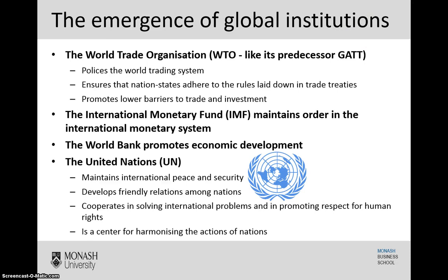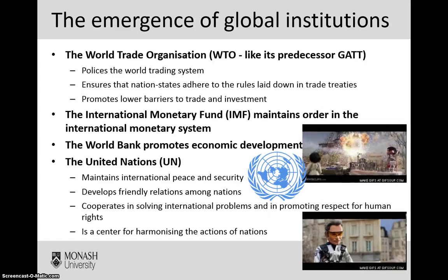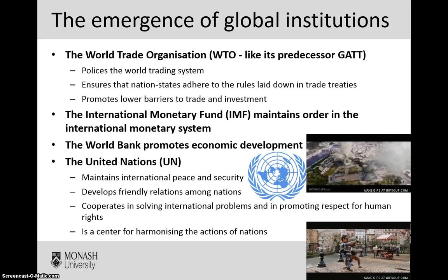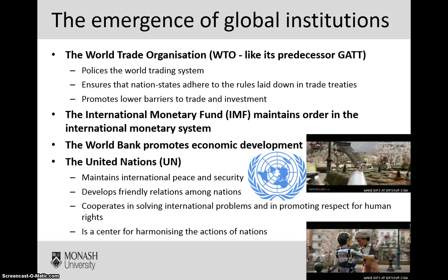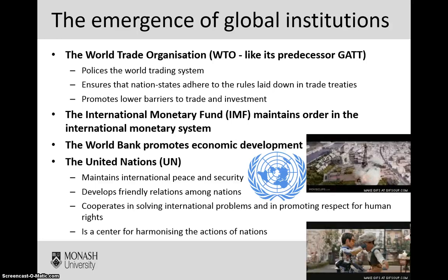The emergence of globalisation has also contributed to the emergence of global institutions. As we've seen more multinational enterprises expanding internationally to compete on a global scale, we've also seen the establishment of global institutions to monitor and police their global operations. The WTO — the World Trade Organisation — has been set up to police the world trading system, aiming to ensure that nation states adhere to rules laid down in trade treaties and promoting the lowering of barriers to trade and investment.